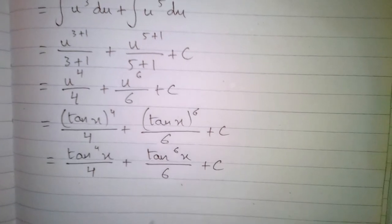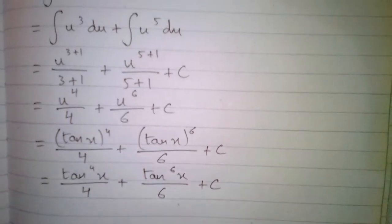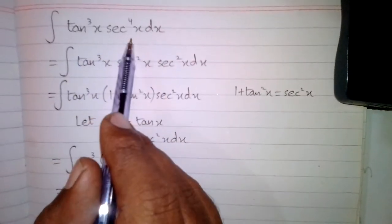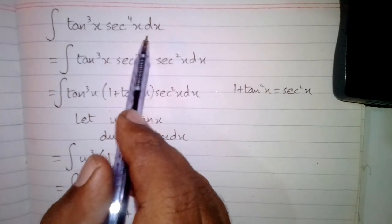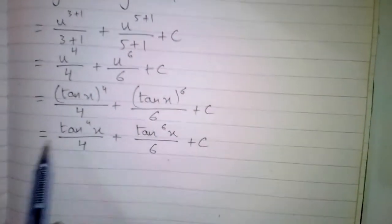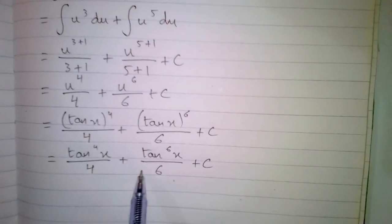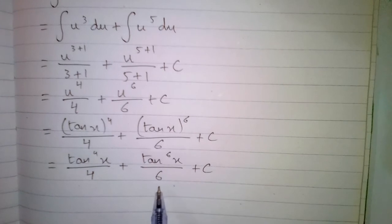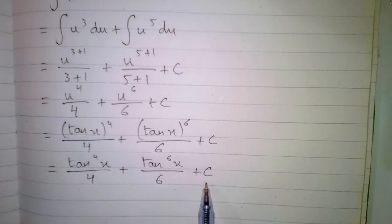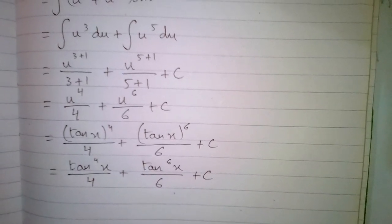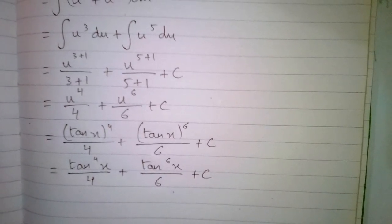We can write this as tan⁴x / 4 + tan⁶x / 6 + C. So the integral of tan³x · sec⁴x dx is tan⁴x / 4 + tan⁶x / 6 + C, where C is the constant.